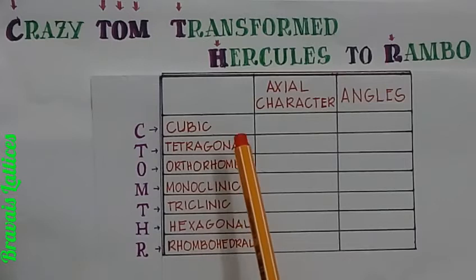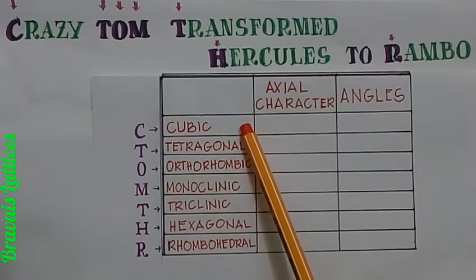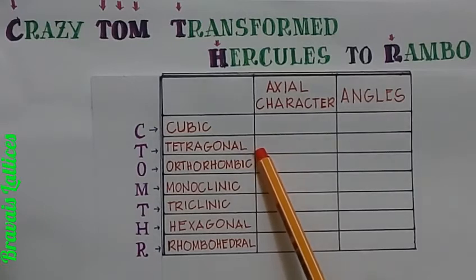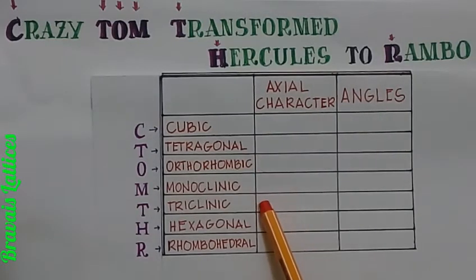The crystal systems that we get with the help of the sentence are cubic, tetragonal, orthorhombic, monoclinic, triclinic, hexagonal, and rhombohedral.